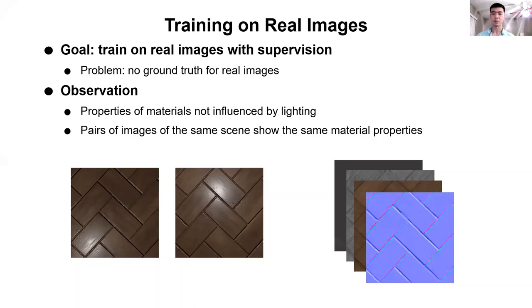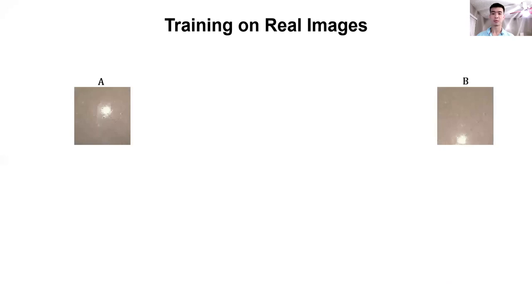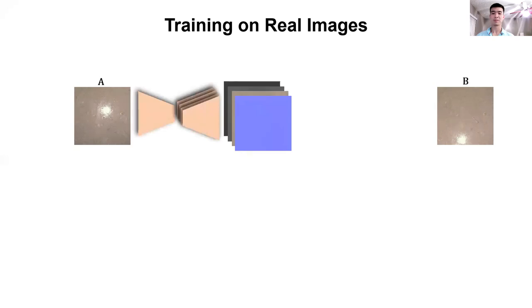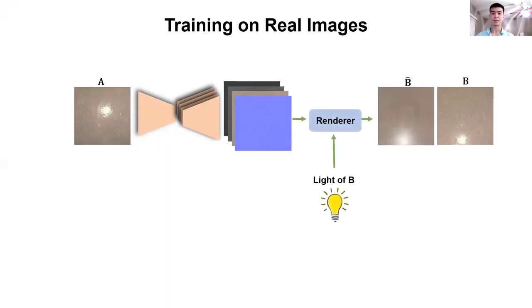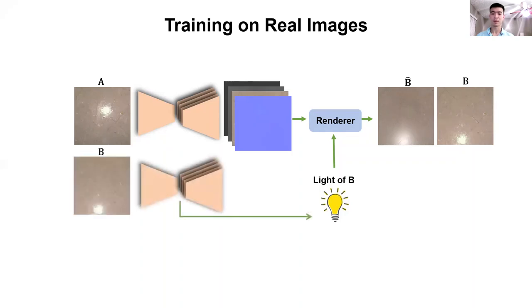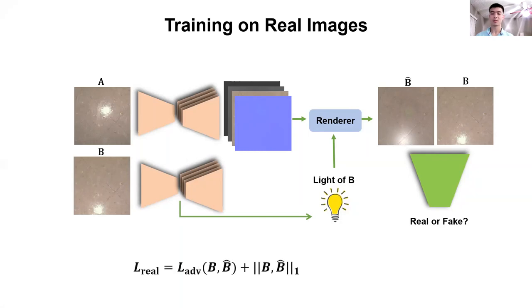Inspired by this observation, we propose to train our network using a pair of images with different lighting. Specifically, given a pair of real images A and B, we use image A as input and image B as ground truth. We estimate SVBRDF parameters from image A, and render image B using these parameters and the position of the light in image B. Note that this is possible because the SVBRDF parameters for both images should be exactly the same. One problem is that the position of the light in image B is unknown; however, our network is able to estimate the position of the input light. Therefore, we obtain the light position in image B by running our network on this image. We use a discriminator to tell whether the rendered image is real or fake, minimizing a loss consisting of the adversarial loss and the L1 loss between the rendered image B and the ground truth image B.